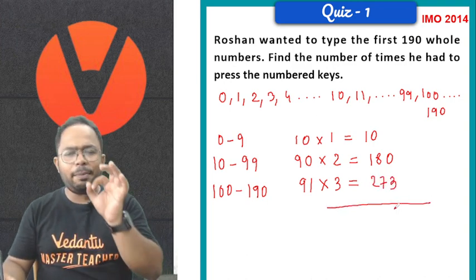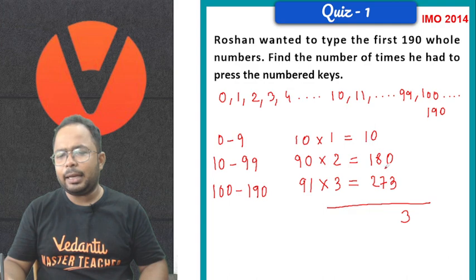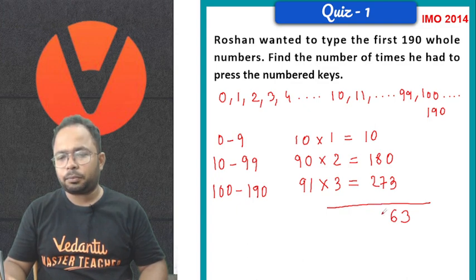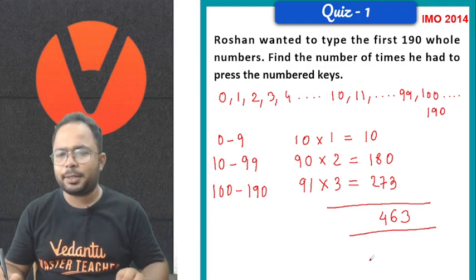So, now, we will be adding it up. On adding, what we are getting? 10 plus 180 plus 273. It is 463. So, total number of times we are pressing is 463 times. Very well done, students.